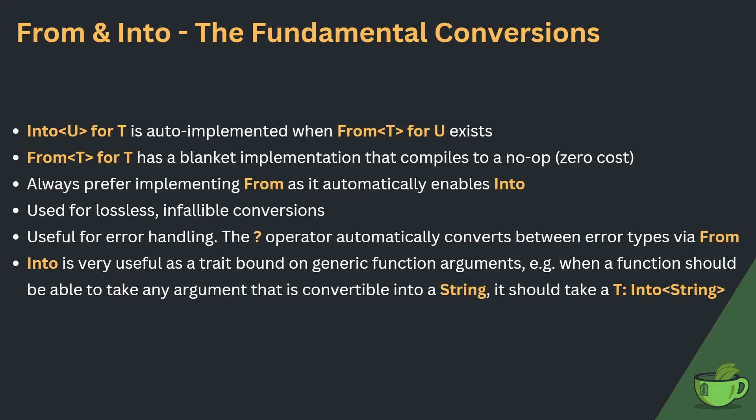To sum up From and Into: Into<U> for T is auto-implemented when From<T> for U exists. And the conversion of From<T> for T has a blanket implementation that compiles to a no-op, so this is zero cost. Therefore, we should always prefer implementing From, as it automatically enables Into. From and Into are used for lossless, infallible conversions, and they're also very useful for error handling, because the question mark operator automatically converts between error types via From. Into is very useful as a trait bound on generic function arguments — for example, when a function should accept any argument convertible into a String, it should take a T bounded by Into<String>.